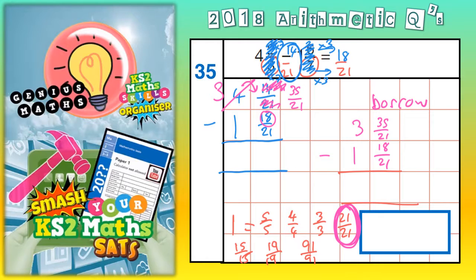35 take away 18 is 17. So 35 21ths take away 18 21ths is 17 21ths.